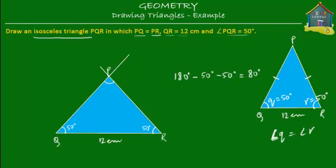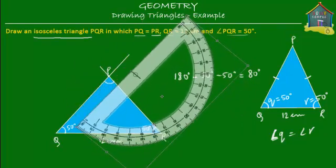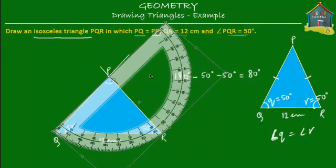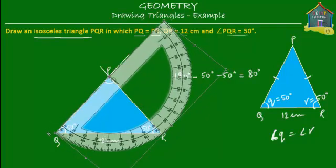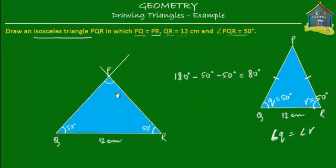Let's verify that this really is 80 degrees. I take the protractor, turn it, place it at P, and measure — 0, 10, 20, 30, 40, 50, 60, 70, and 80. So this angle really is 80 degrees. This is correct — equal to 80 degrees.